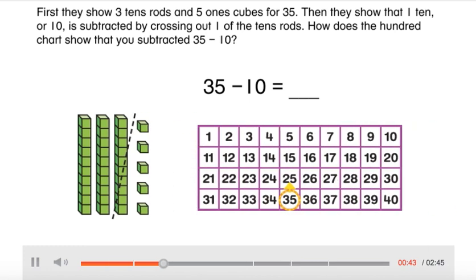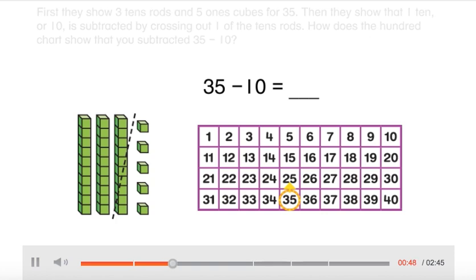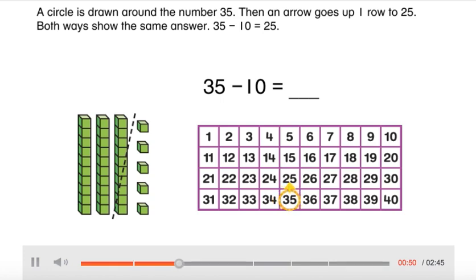How does the hundred chart show that you subtracted 35 minus 10? A circle is drawn around the number 35, then an arrow goes up one row to 25.